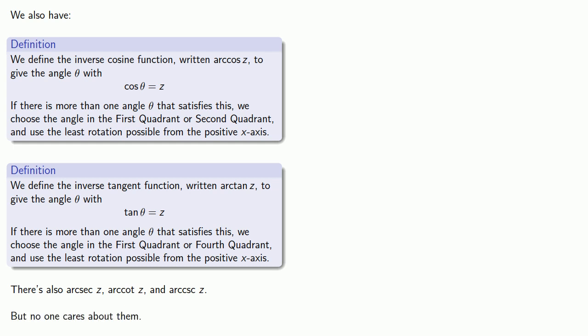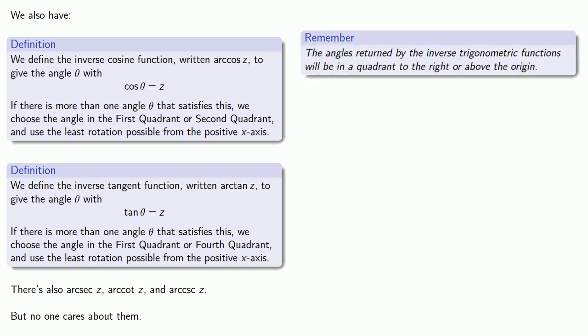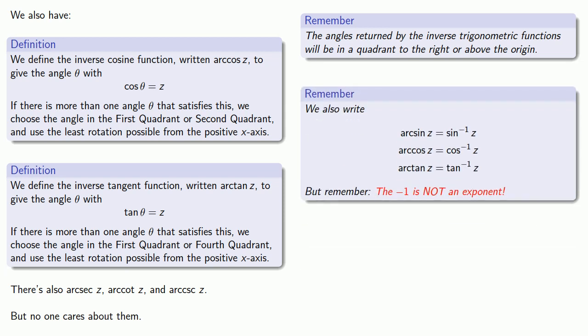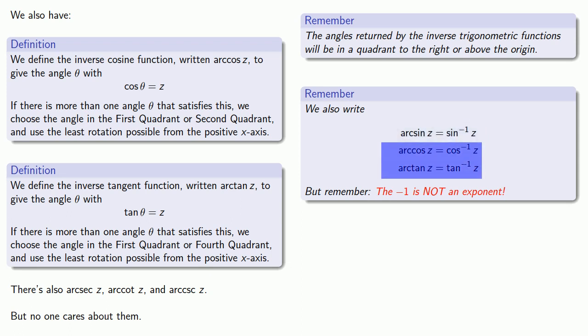What is important to remember is that the angles returned by the inverse trigonometric functions will be in a quadrant to the right or above the origin. One caution on notation: we also write arc sine z as sine negative 1 z, arc cosine as cosine negative 1 z, and arc tan as tan negative 1 z.